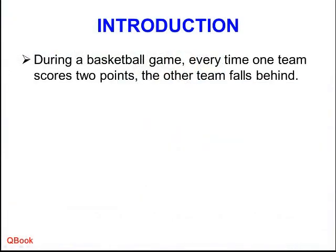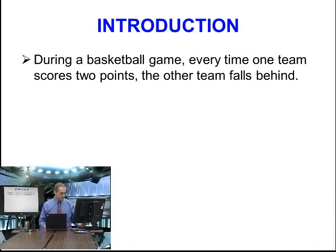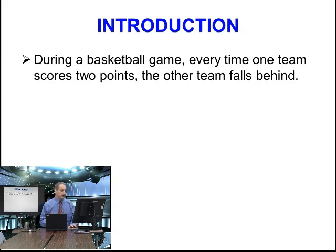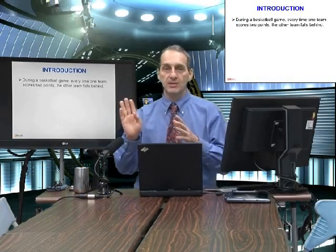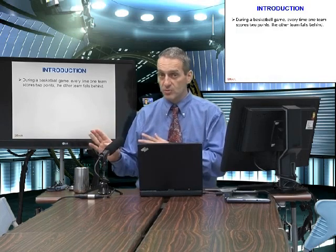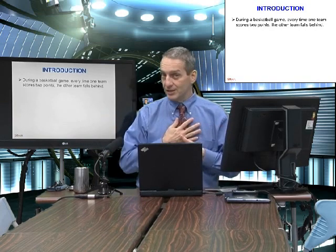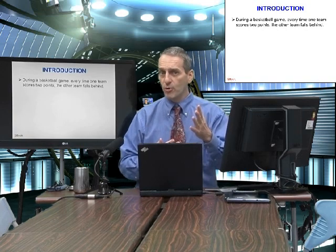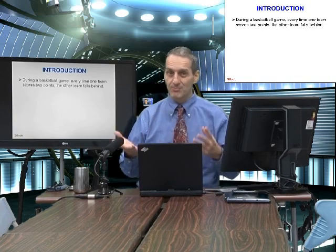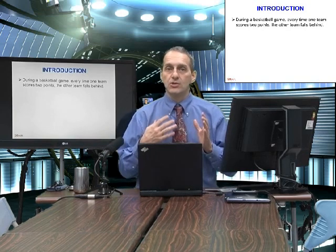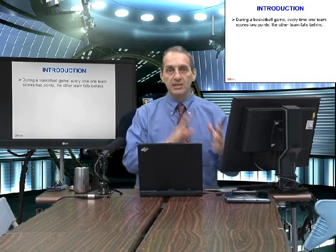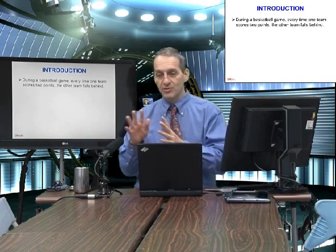Let's think of distributive bargaining as a basketball game. Every time one team makes a score, they get two points. But the other team does not get two points — they don't lose two points either. However, if you get two points, I get no points. You're two ahead of me. A team gets two points, they move ahead, but that's the same as the other team moving behind.